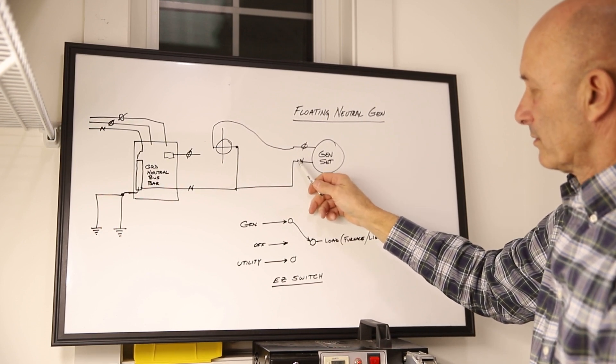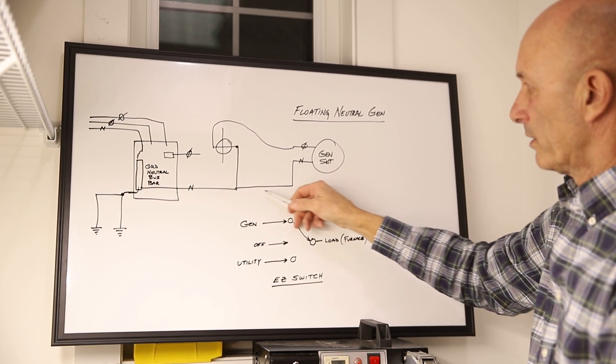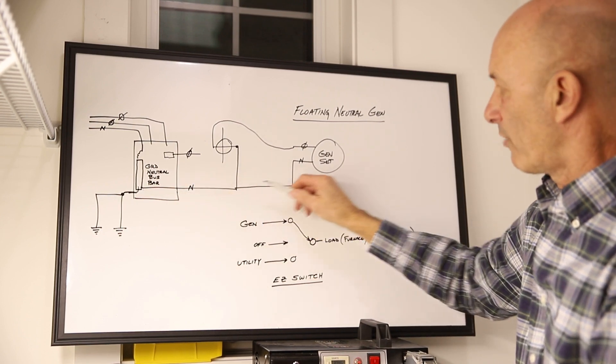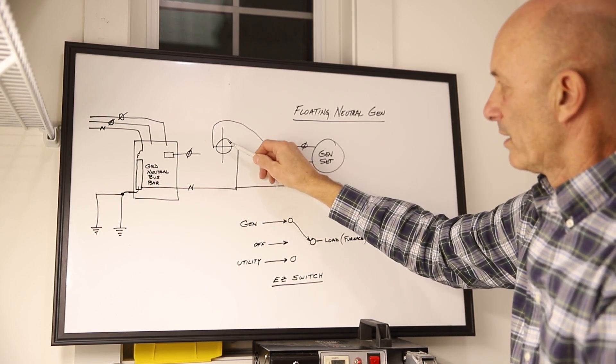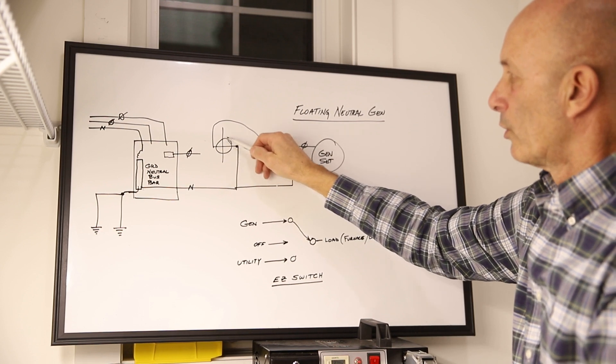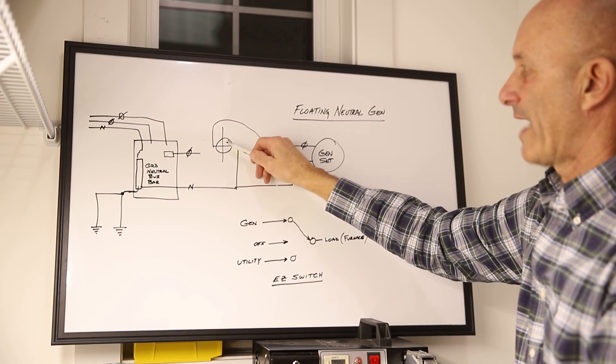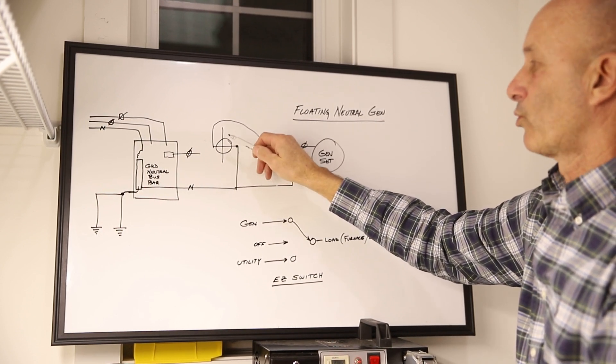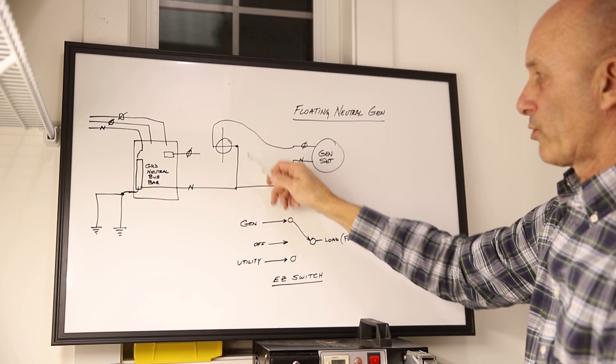So you think, or some people think, that this neutral now is connecting and wants to go that way. Well first off, the neutral goes this way. It wants to energize this load and satisfy it and let it run, it wants to run the furnace, it wants to run the lights or the refrigerator.